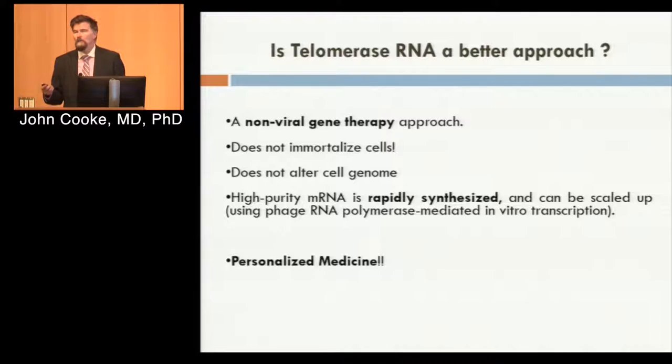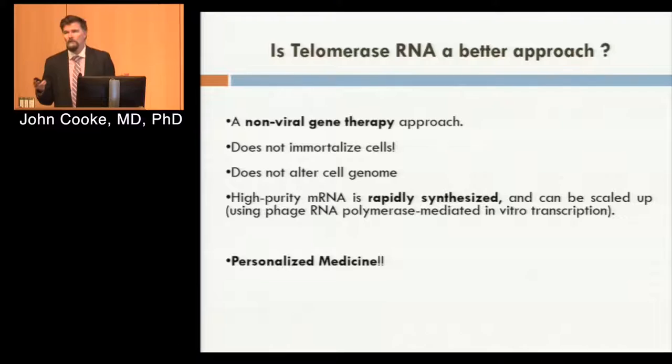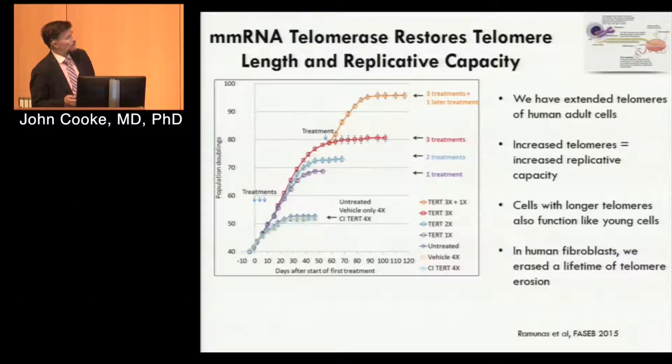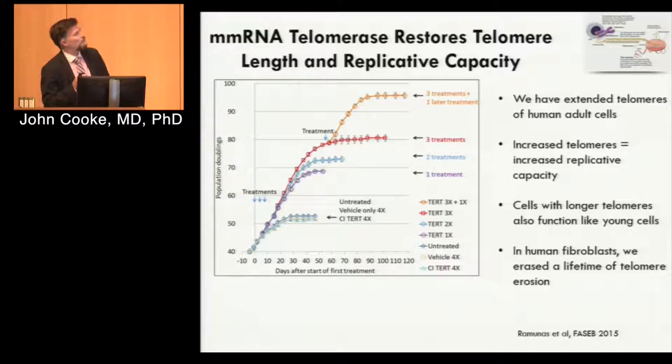There wasn't really any reason to believe that one, two, or three transfections with RNA would have any effect. It was a bit of a leap to think we could do this with RNA because RNA only persists in the cell for hours. The protein made from that transcript may last longer — maybe 24 to 48 hours — but by 72 hours, the telomerase generated using RNA is gone. So there wasn't much reason to believe we would have an effect, but we did the studies at Stanford, published last year in FASEB Journal, and in fact this approach works — more dramatically than we had anticipated.